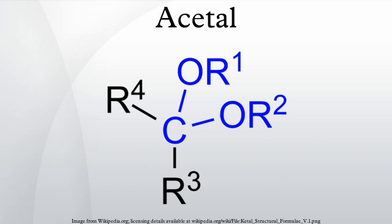They can protect either the carbonyl in a molecule or a diol — that is, either the carbonyl or the alcohols, or both, could be part of the molecule whose reactivity is to be controlled. Various specific carbonyl compounds have special names for their acetal forms. For example, an acetal formed from formaldehyde is sometimes called a formal, or the methylene-dioxy group. The acetal formed from acetone is sometimes called an acetonide.